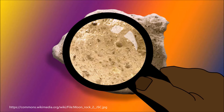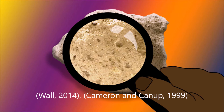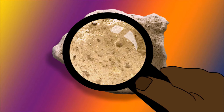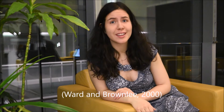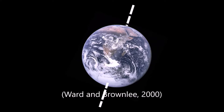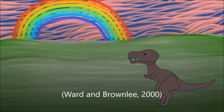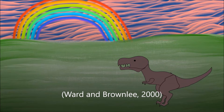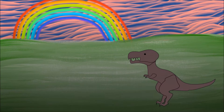Since lunar rock samples have been dated to be around 4.4 billion years old, the impact is predicted to have taken place within about 100 million years of the Earth's formation. It is remarkable that the moon, which has stabilized the tilt of Earth's spin axis, making it favorable to life, came about at just the right time in Earth's growth process.